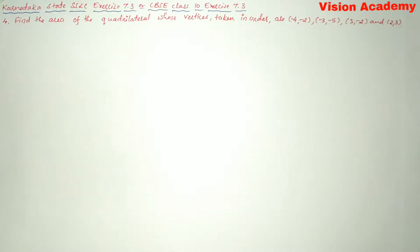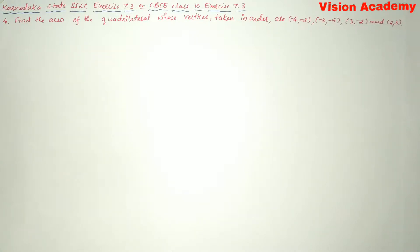In this video we are going to solve Karnataka state SSLC exercise 7.3 or CBSE class exercise 7.3, question number 4: find the area of the quadrilateral whose vertices taken in order are (-4, -2), (-3, -5), (3, -2), and (2, 3).